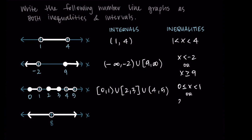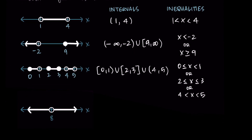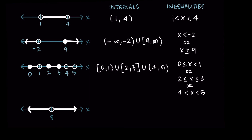Continuing the inequality for the three-part graph: or two is less than or equal to x is less than or equal to three — values between two and three including both endpoints. Then or four is less than x is less than five — x is between four and five but we don't include those endpoints, so it's strictly less than for both symbols.